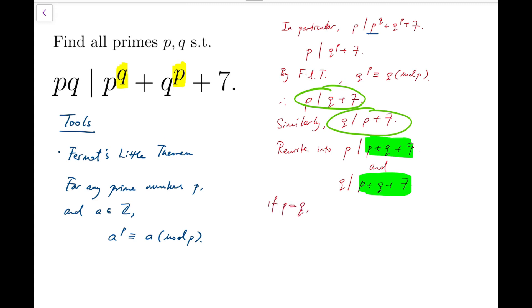We can first say that if p equals q, then p would divide not just p plus q plus 7, but now it becomes 2p plus 7. So that means p divides 7, and the only possibility for that to happen is p equals 7. And therefore, p and q are then both 7. However,